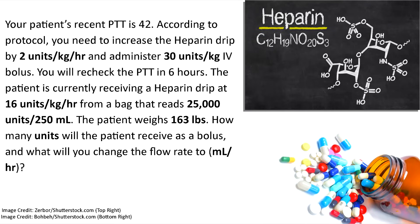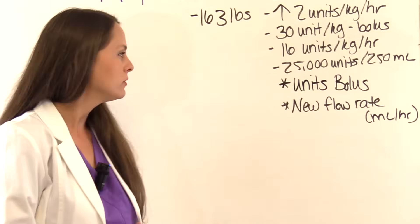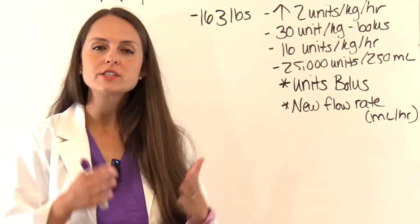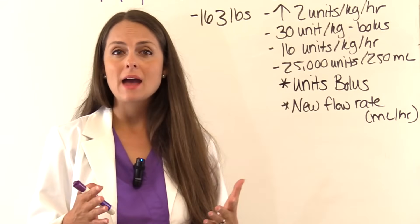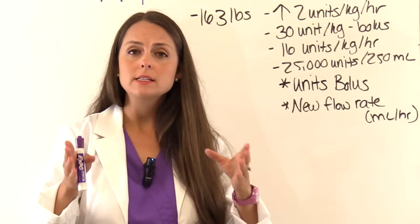Our next problem says your patient's recent PTT is 42. According to protocol, you need to increase the heparin drip by 2 units per kilogram per hour and administer a 30 units per kilogram IV bolus. You will recheck the PTT in six hours. The patient is currently receiving a heparin drip at 16 units per kilogram per hour from a bag that reads 25,000 units per 250 mls. The patient weighs 163 pounds. We need to find the bolus units and the new flow rate. Their PTT wasn't therapeutic, so we have to adjust the drip.